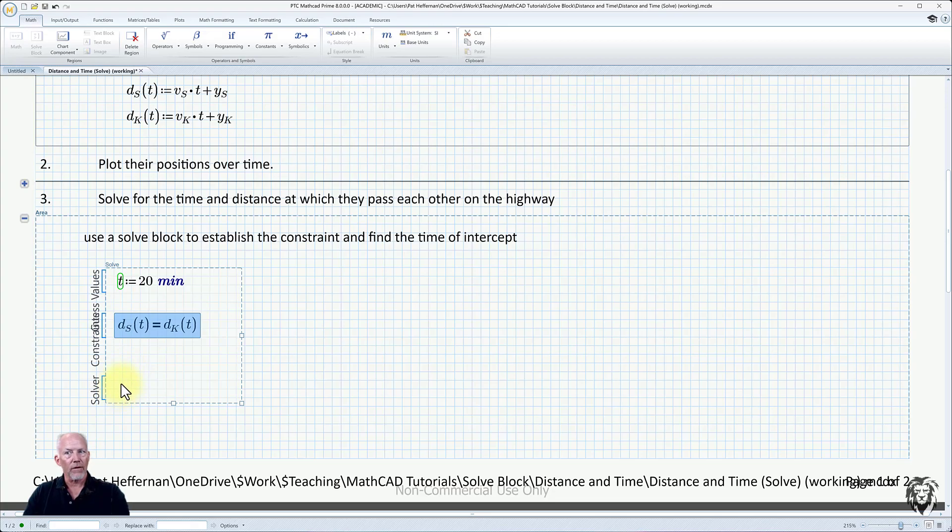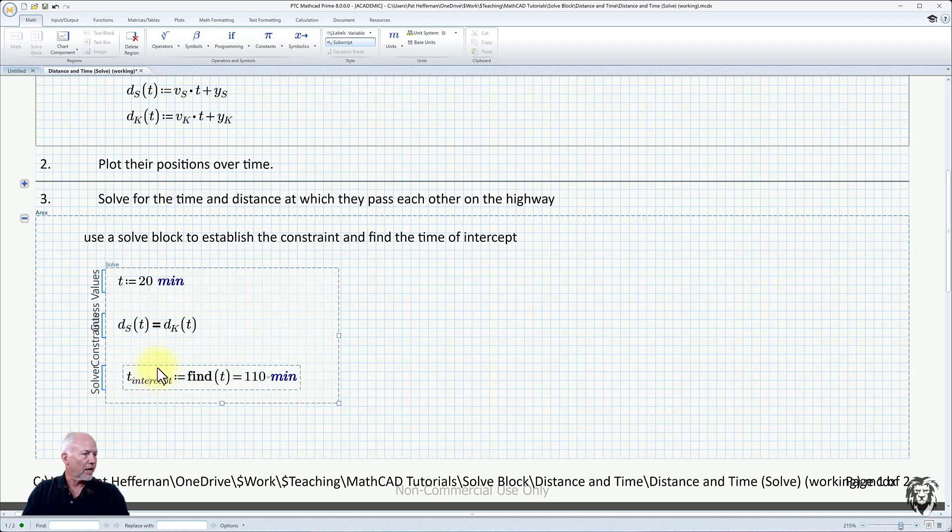Down in the solver, we want to know what the time of intercept is. So it's t, I'm going to call that t_intercept. We're going to use the find t. Now I set equals, and I want that in minutes. We see that it's 110 minutes. It's using that numerical solver to give us an answer for the time where the constraints are satisfied, where Siobhan's distance and Keegan's distance is equal. We knew it was roughly out around the two-hour mark, so that's making perfect sense from our plots earlier. We can tidy that up and make it all look nice and collapse that.